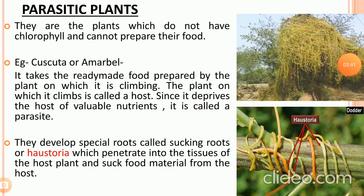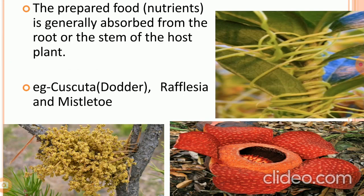Next, we have parasitic plants. These are plants which do not have chlorophyll and cannot prepare their own food. One example is Cuscutta, also known as Amarbele. It takes ready-made food from the plant on which it is climbing, called the host. Since it deprives the host of valuable nutrients, it is called a parasite. These plants develop special roots called sucking roots or haustoria, which penetrate into the tissues of the host plant and suck food material from it.